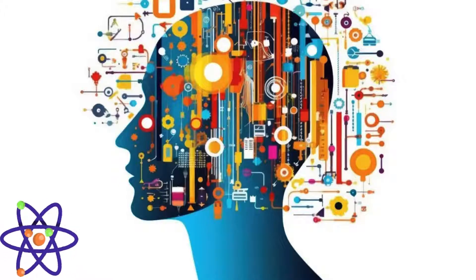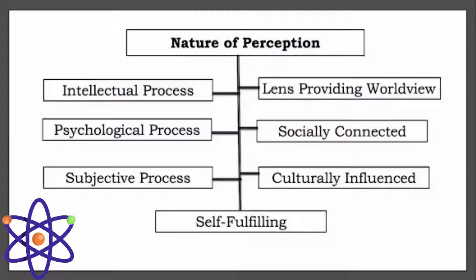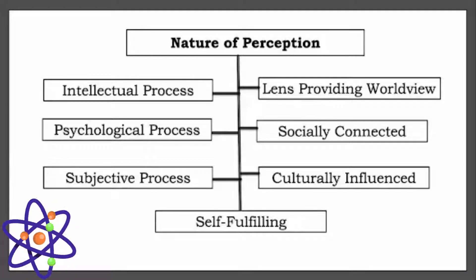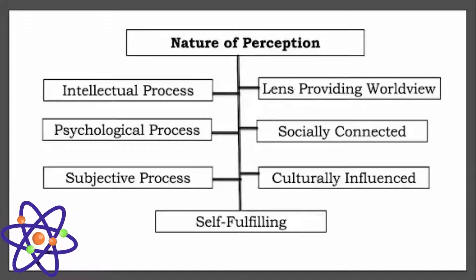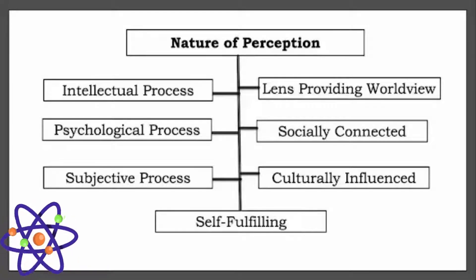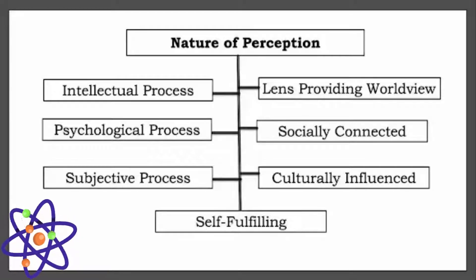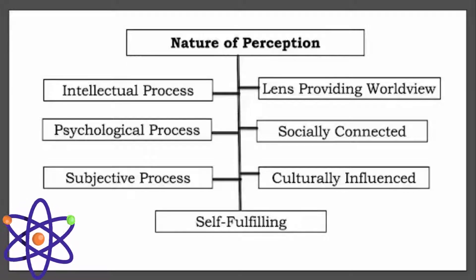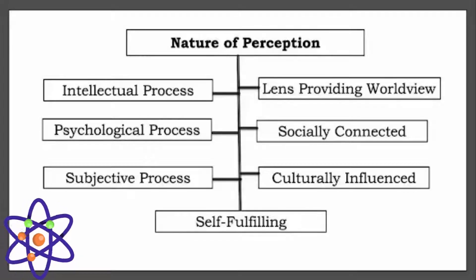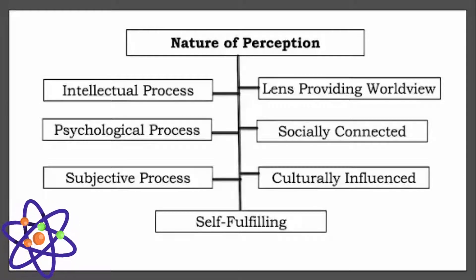Understanding perception is crucial as it significantly impacts workplace behavior, interaction, and overall organizational effectiveness. The nature of perception involves several stages. Initially, it begins with perceiving stimuli through sensory organs. The sensory input is then organized and interpreted by the brain to form a coherent picture of the environment. The interpretation phase is particularly critical as it is influenced by the perceiver's background, beliefs, and current emotional state.